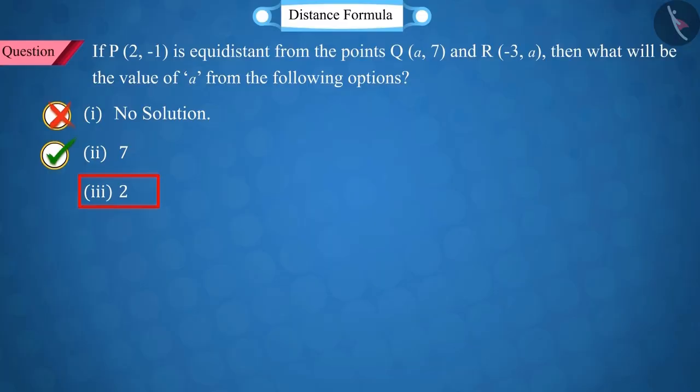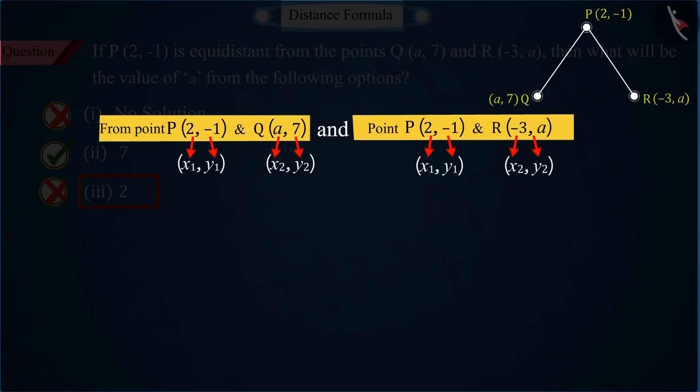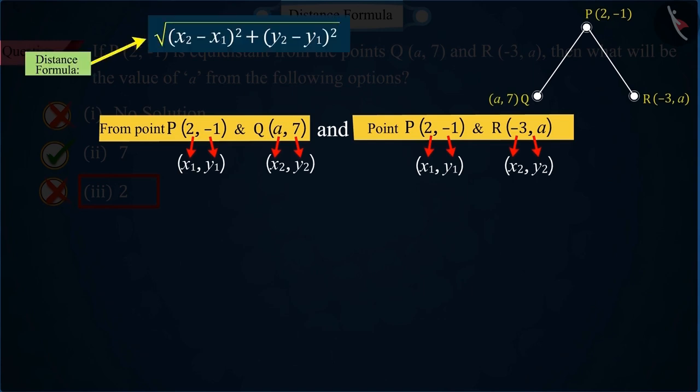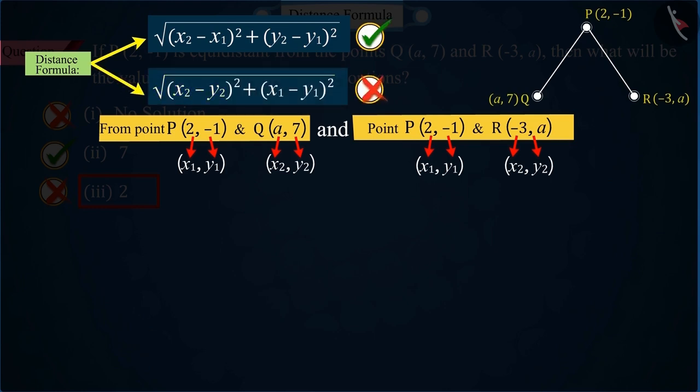If you have selected option 3, then it is also a good try, but this is also the wrong answer. Because in place of square root of the square of x2 minus x1 plus the square of y2 minus y1, we put the square root of the square of x2 minus y2 plus x1 minus y1, and on the same basis you solve it further.